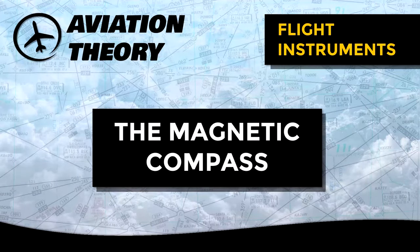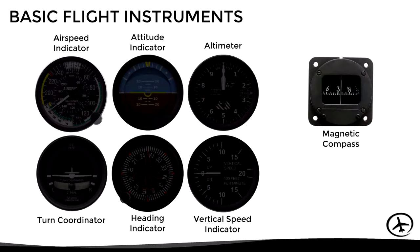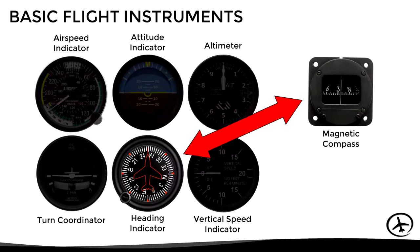Today we will talk about the magnetic compass. This is one of the simplest but also one of the most important instruments in an aircraft, and although it is not included in the six basic flight instruments or six pack that we have discussed in previous videos, it is closely related to the heading indicator.